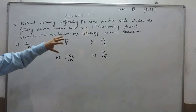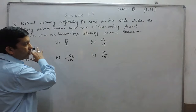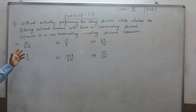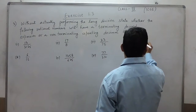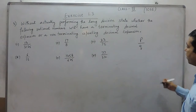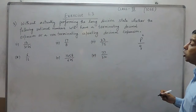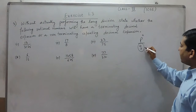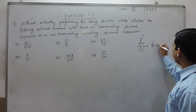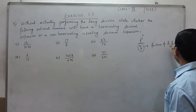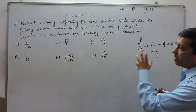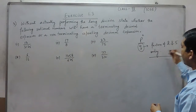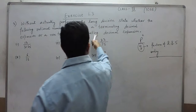Here the question is: without actually performing the long division, we have to find out which of these rational numbers are non-terminating repeating decimals and which are terminating decimals. We have understood that we are not bothered about the numerator — we are only concerned with the denominator in the lowest fraction. If the denominator has factors of 2 and 5 only, then they will be terminating decimals. While if they have any other factor except 2 and 5, then they are non-terminating repeating decimals.